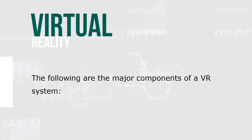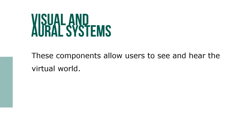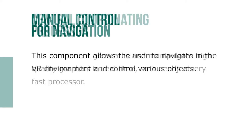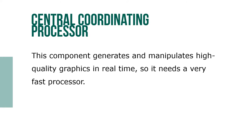The following are major components of a VR system. Visual and Aural systems are components that allow users to see and hear the virtual world. Manual control for navigation allows the user to navigate in the VR environment and control various objects. Central coordinating processors generate and manipulate high-quality graphics in real-time, so a very fast processor is needed.